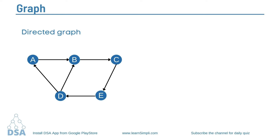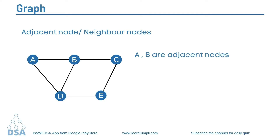Let us understand some terms of the graph. The first one is adjacent nodes or neighbor nodes. Node A is adjacent to node B if there is an edge from A to B. If there is an edge from one node to another node, those two nodes are adjacent nodes. For example, here A and B are adjacent nodes — A is adjacent to B and B is adjacent to A. But in a directed graph, there may be an edge from A to B but no edge from B to A.